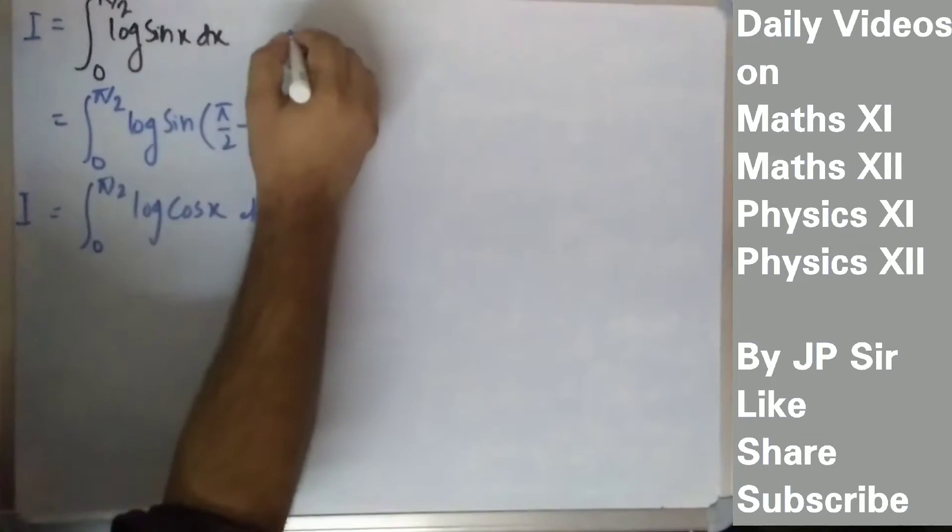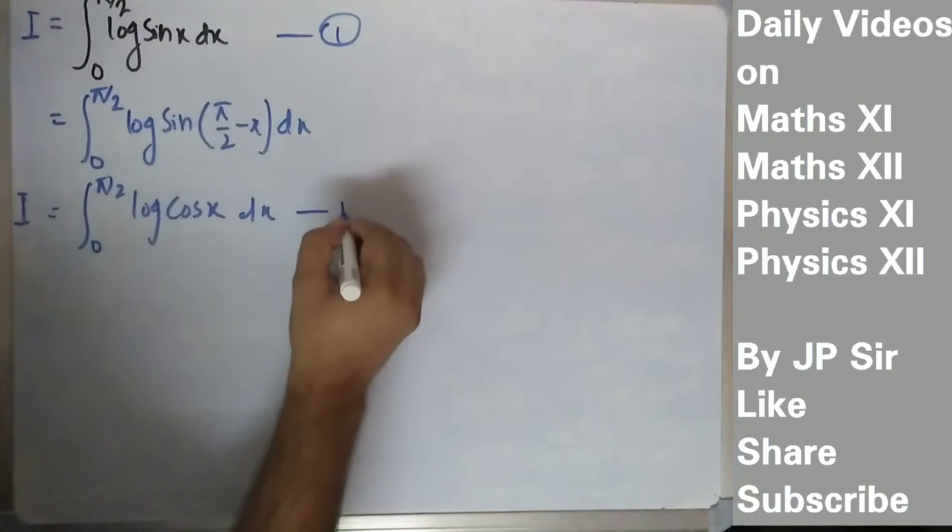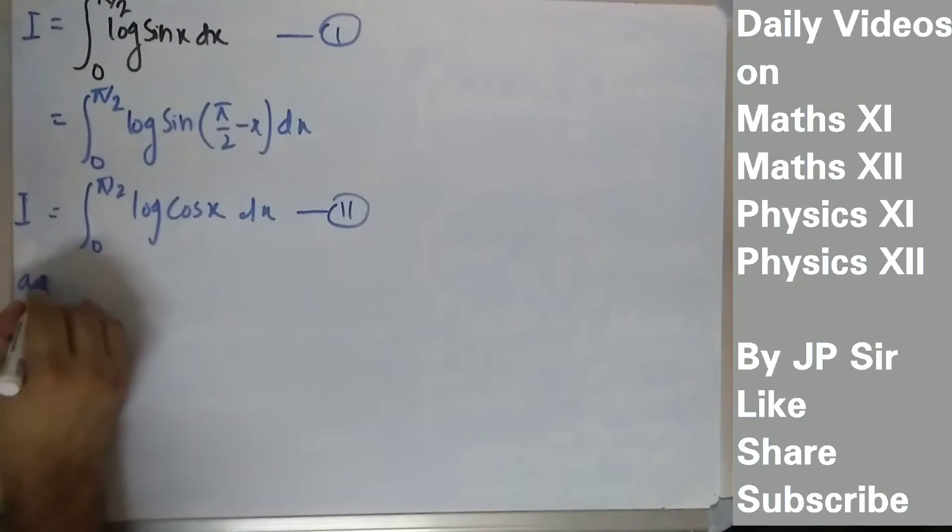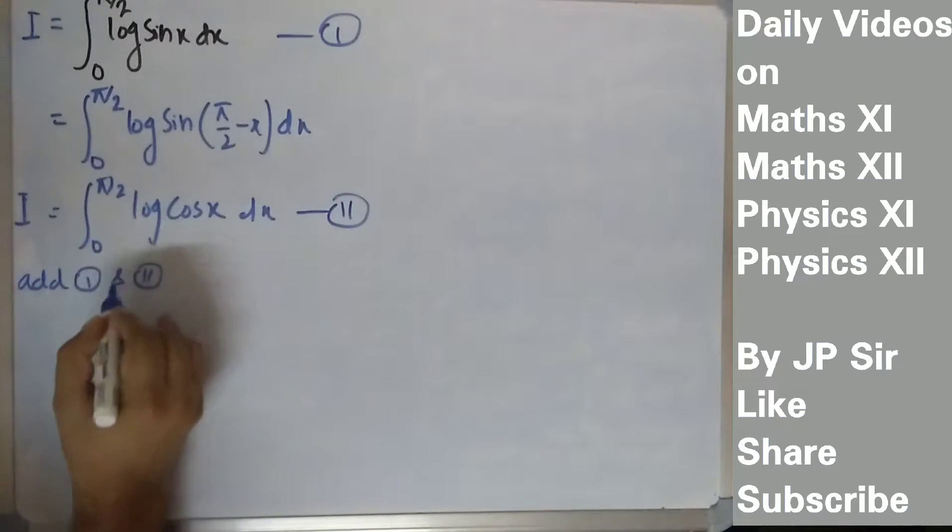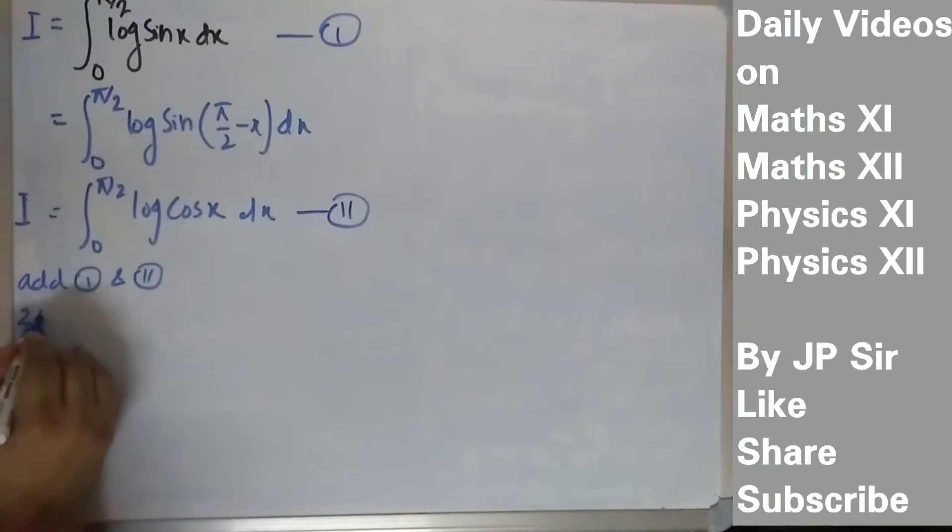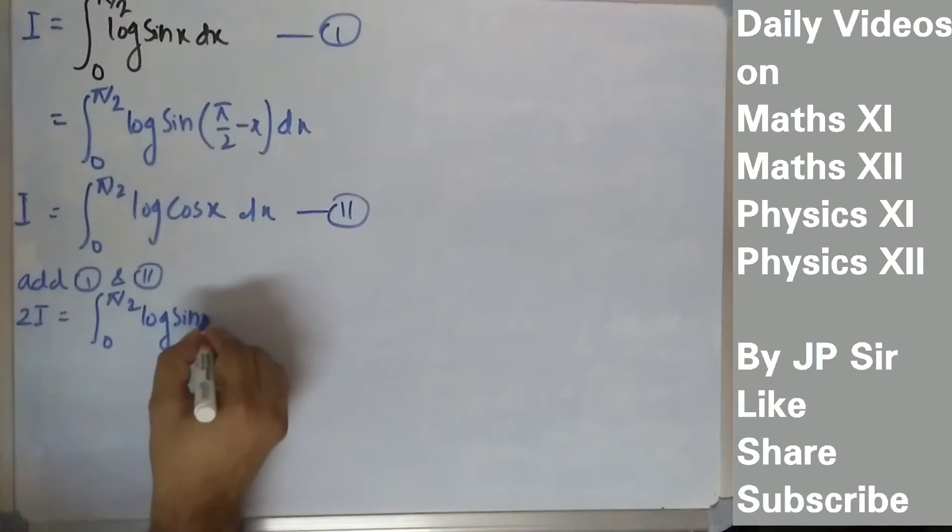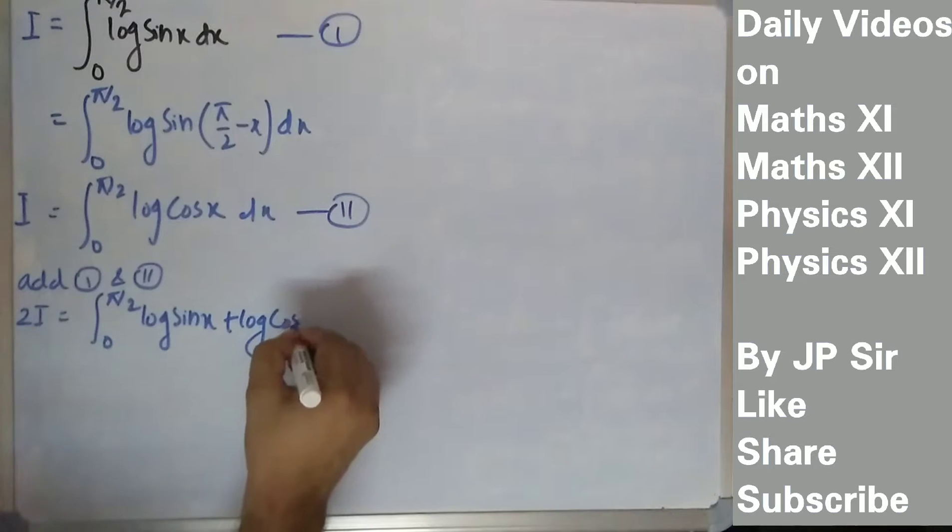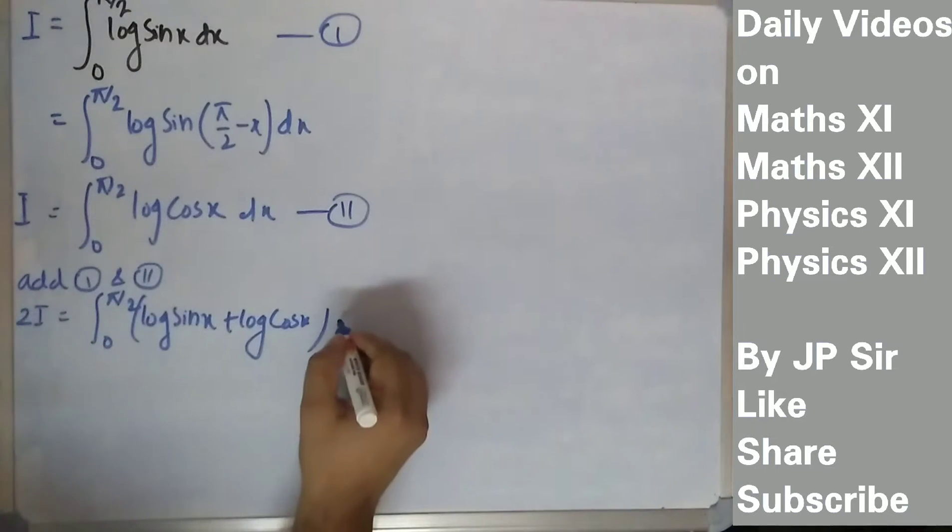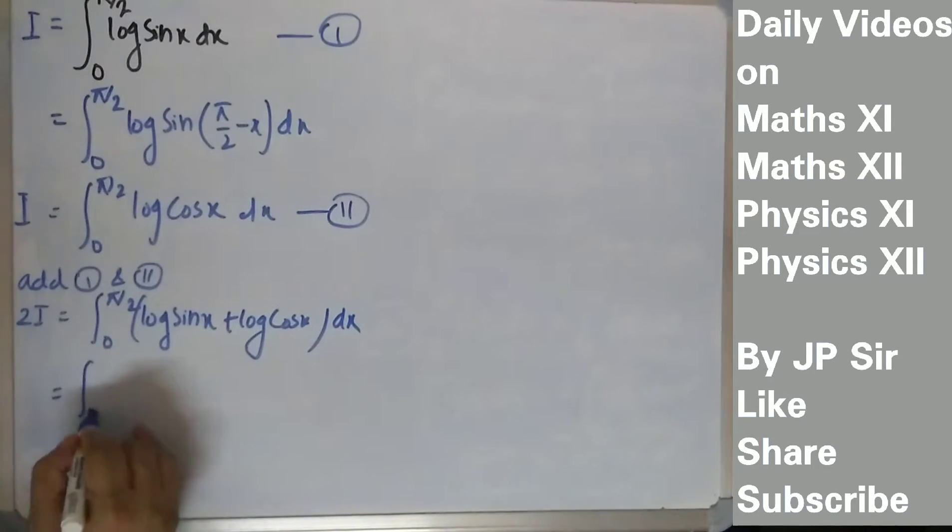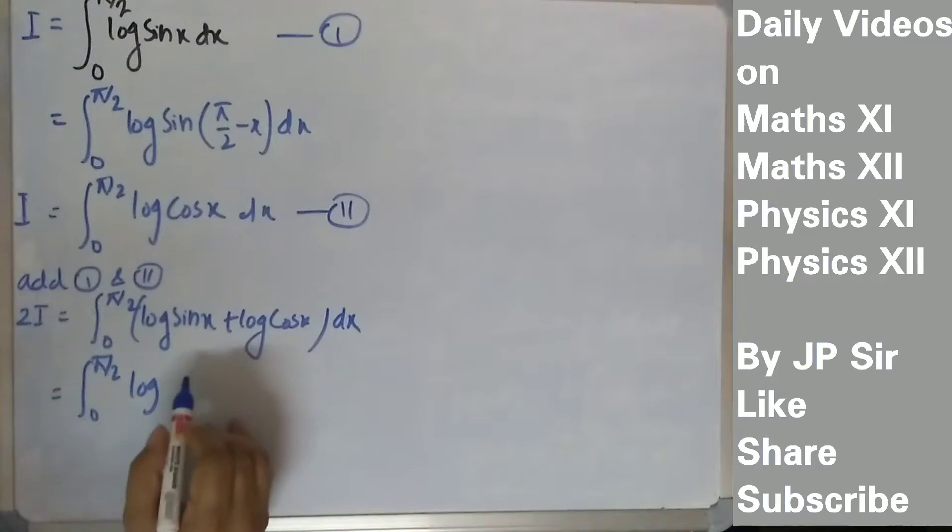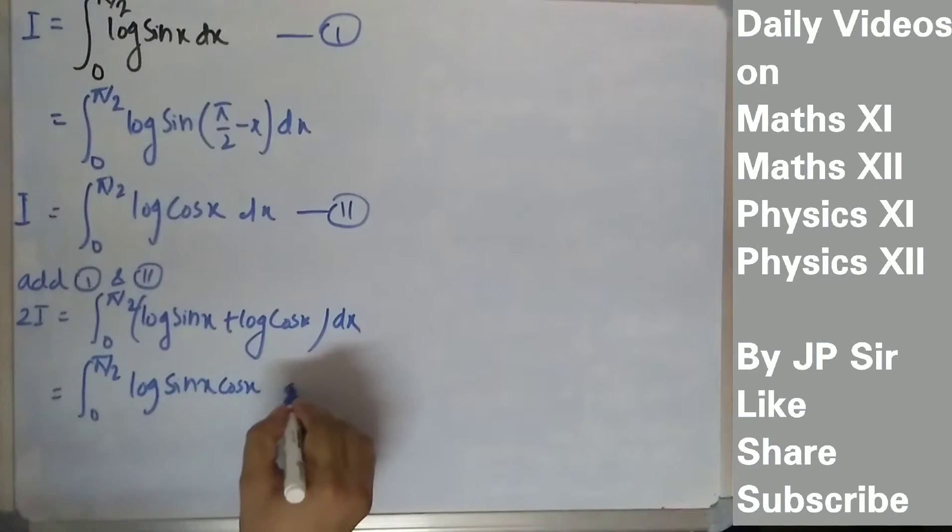It is still I because it's the same thing. Now we will add equation number 1 and equation number 2. So we will have I plus I equals 2I. The integral from 0 to pi by 2, the limit is same, becomes log sin x cos x dx.